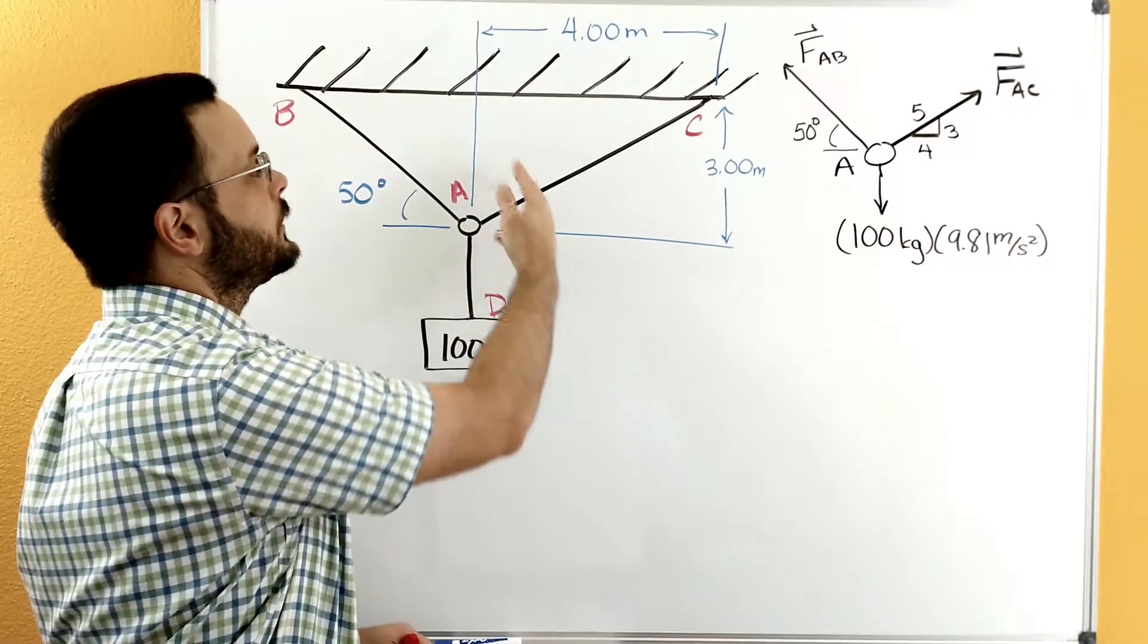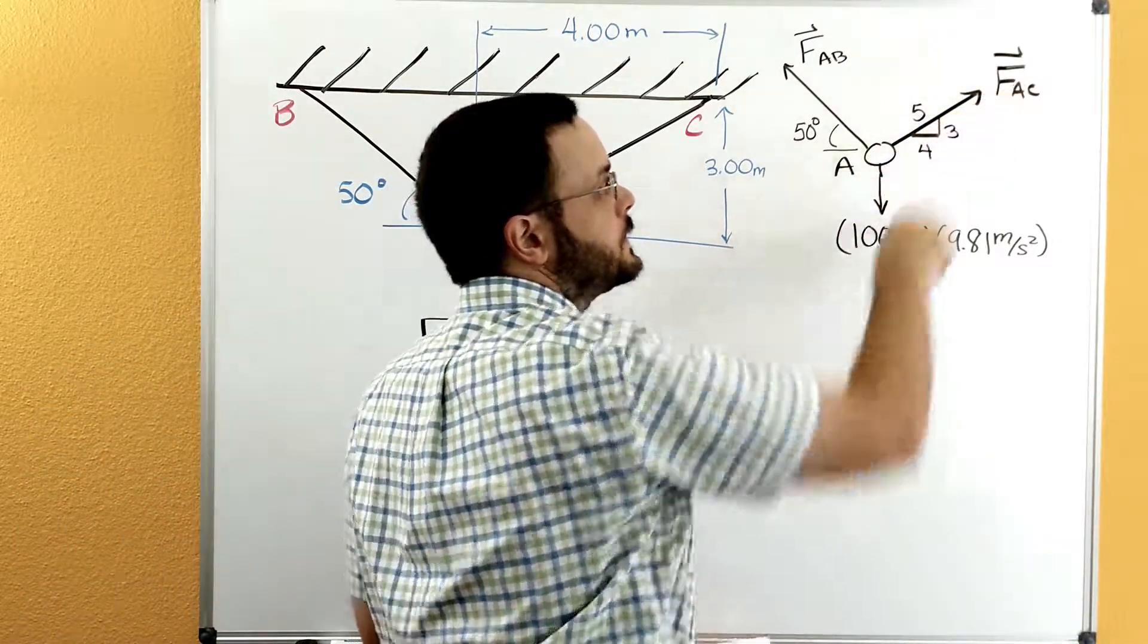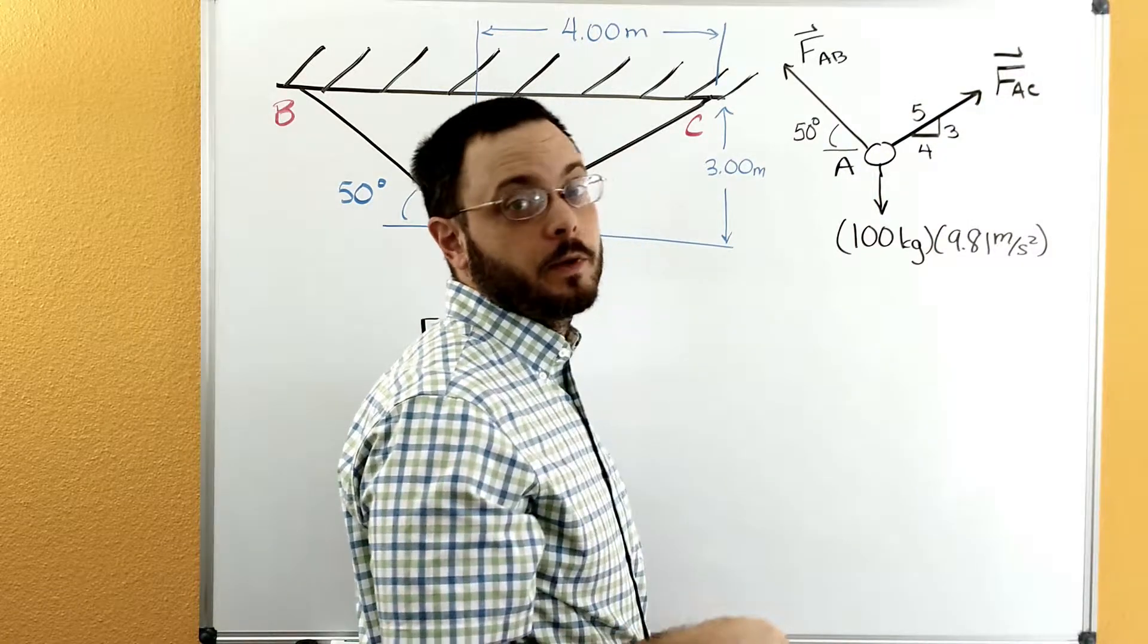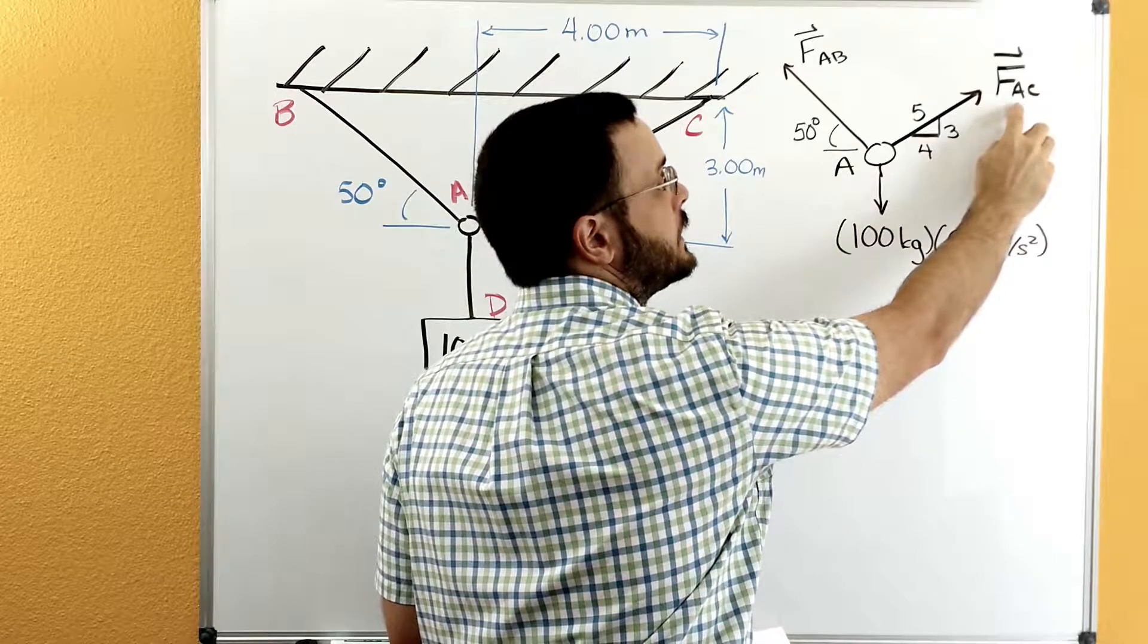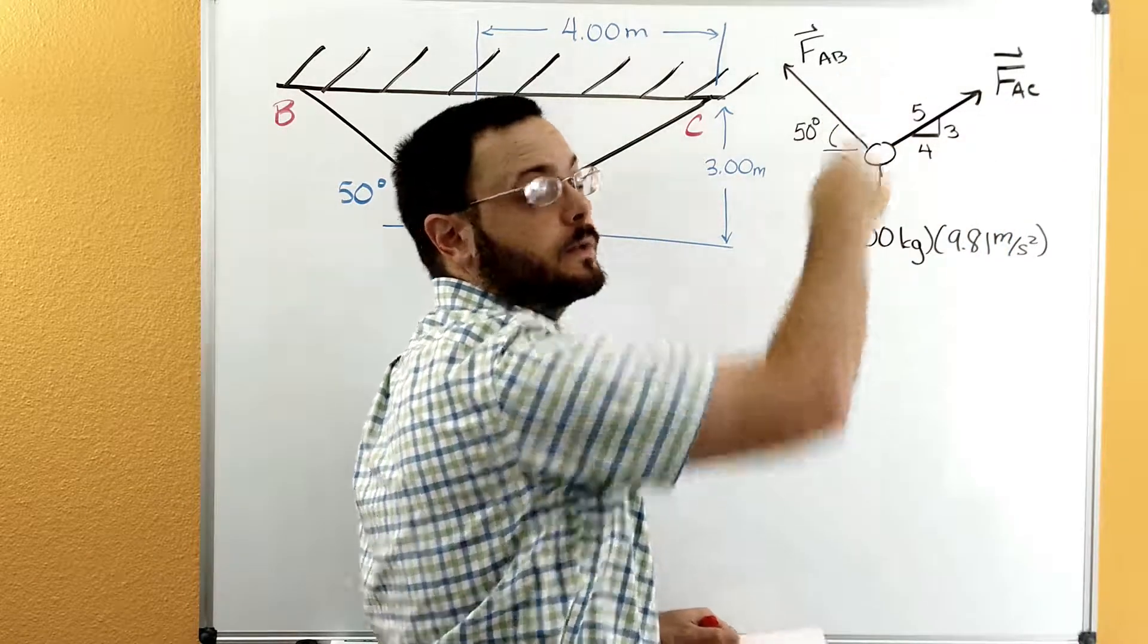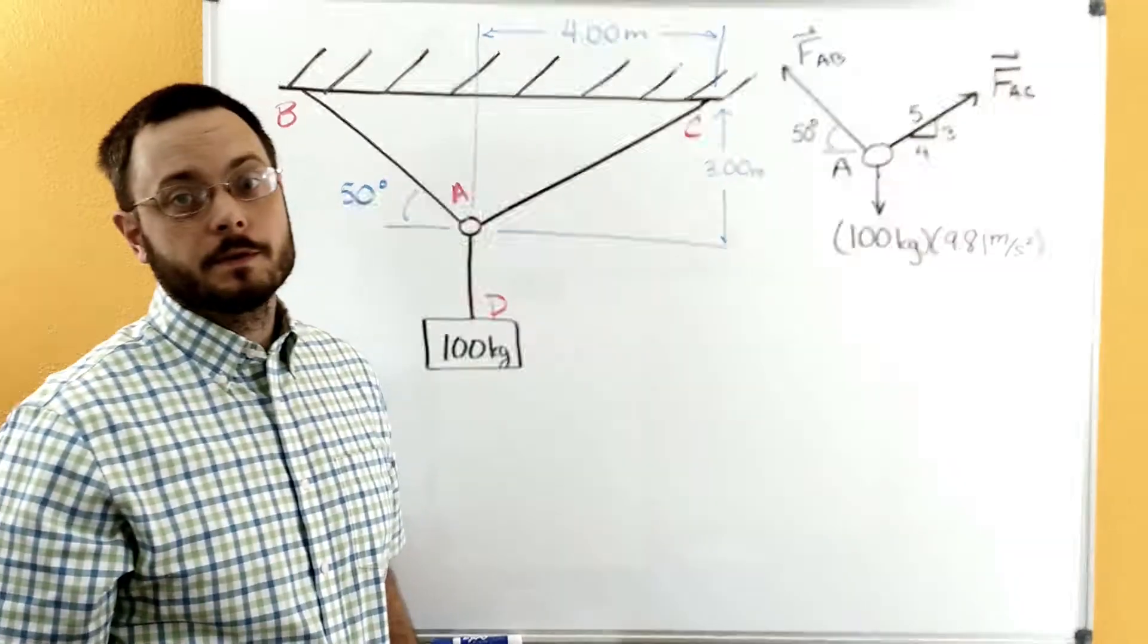Over here, we cut through AC, and so we show the force that was in AC. We'll label it again F or T, and then since it's in AC, FAC, and then again with the arrow on top to show that it's a vector.